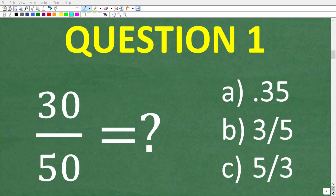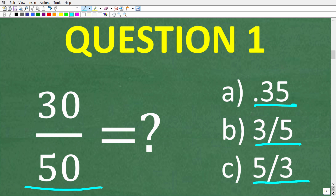Which is equivalent to the fraction 30 over 50? A, the decimal 0.35; B, the fraction 3 fifths; or C, the fraction 5 thirds?